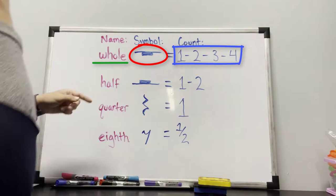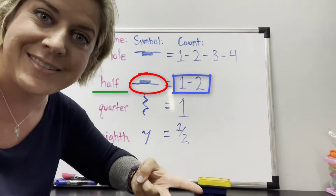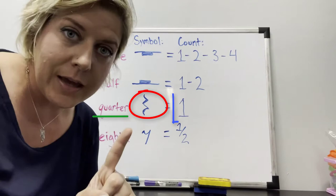This is a half rest, which gets two counts, again, two counts of silence. This little lightning bolt here is a quarter rest, which gets one count of silence. And then we have the eighth rest, which gets half of a count of silence.